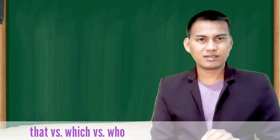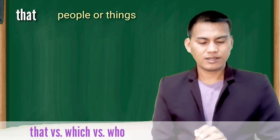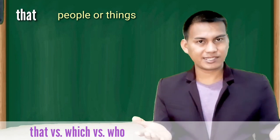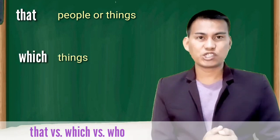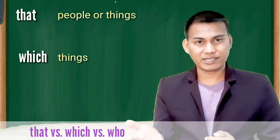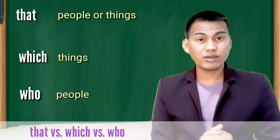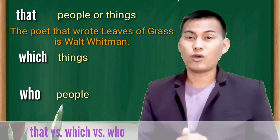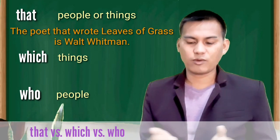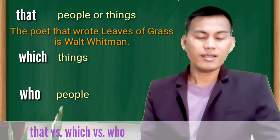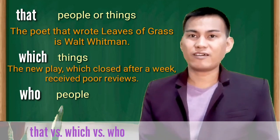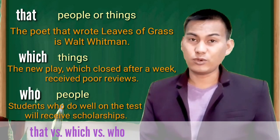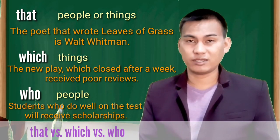That, which, who. That may refer to people or things. Which refers to things only. Who refers only to people. The poet that wrote Leaves of Grass is Walt Whitman. The new play which closed after a week received poor reviews. Students who do well on the test will receive scholarships.